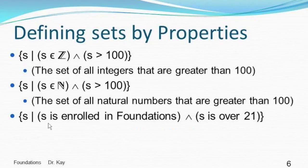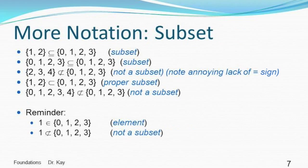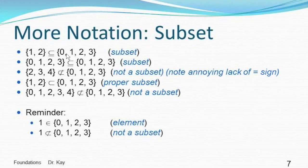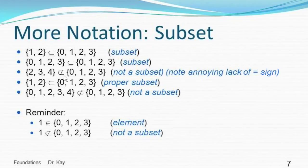We're going to use the notation your book uses for subset — a sideways U with an equal sign — meaning subset. If a set is a subset of another set, all elements in the first set are included in the second. So the set {1, 2} is a subset of {0, 1, 2, 3}. Any set is a subset of itself, so {0, 1, 2, 3} is indeed a subset of itself. Your book uses a not-subset symbol: {2, 3, 4} is not a subset of {0, 1, 2, 3}.